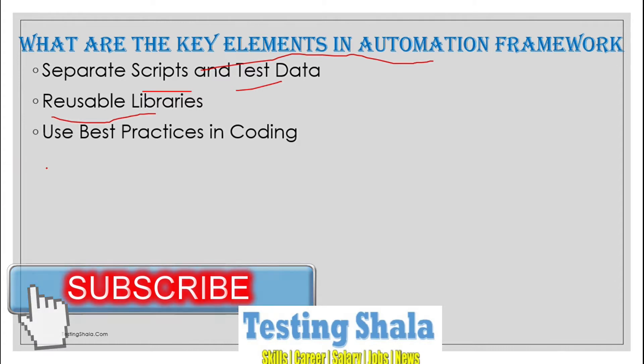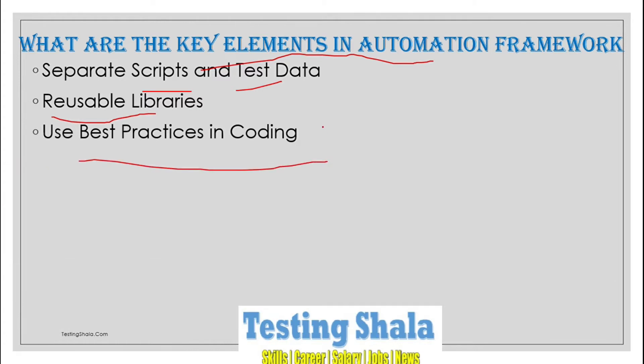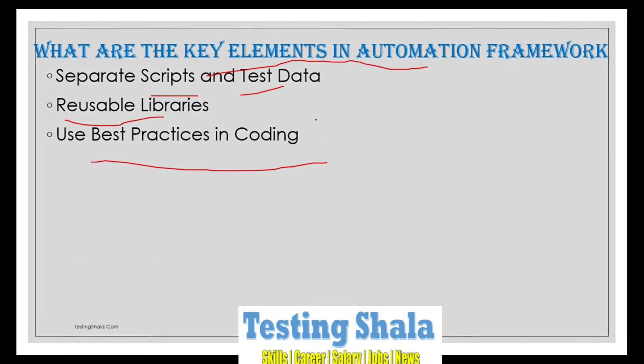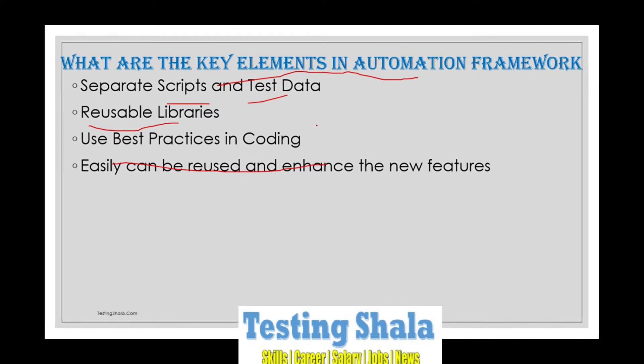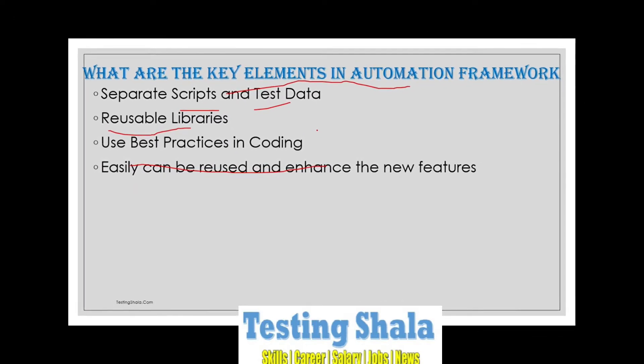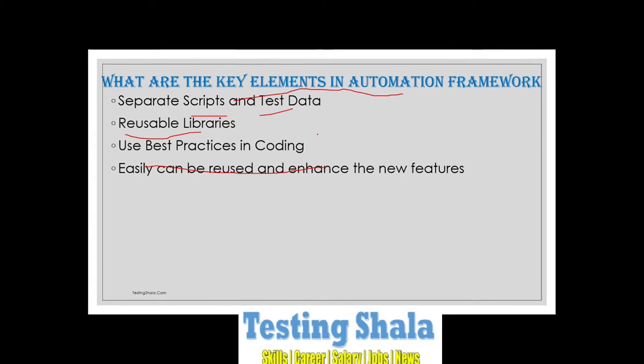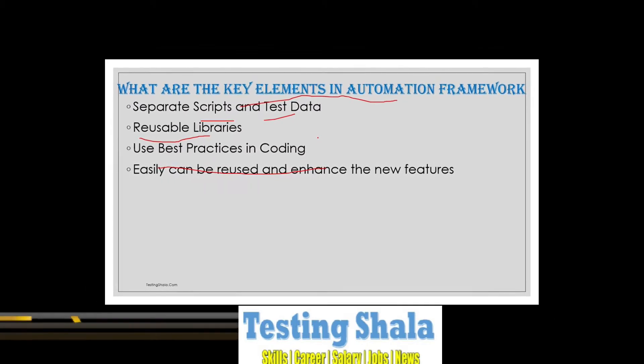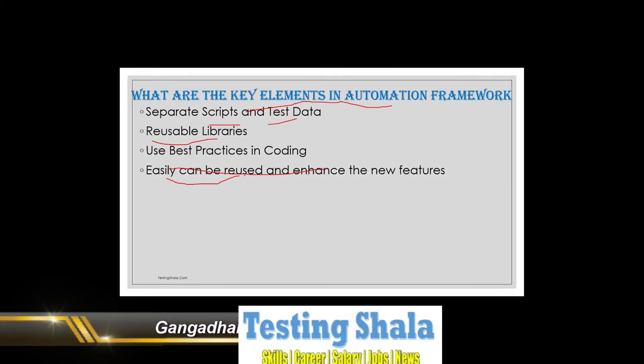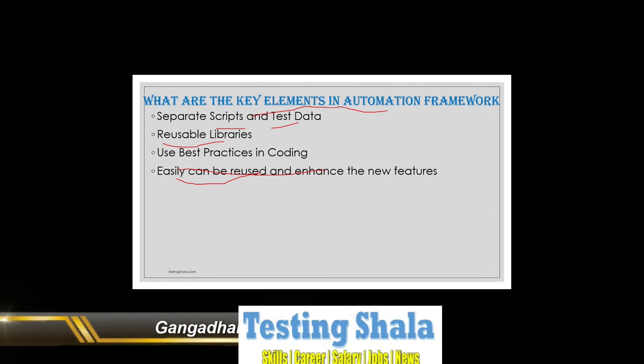When implementing a proper automation framework, the things which will be developed as part of the reusable libraries or reusable functions can be easily reused, and we can also enhance them using the existing functionality.